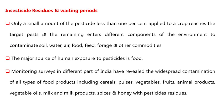In pesticide residues and waiting periods, only a small amount of pesticides — less than one percent — applied to a crop reaches the target pest, and the remaining pesticide enters different components of the environment to contaminate soil, water, air, food, feed, forage and other commodities.